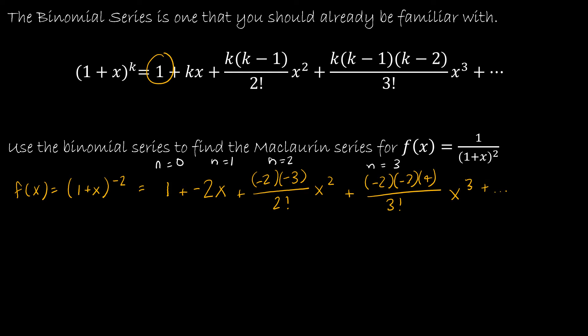Let's see what I can simplify. 2 factorial is 2 times 1, and 3 factorial is 3 times 2 times 1. The first term is 1, and the second term simplifies to negative 2x. For the next term, I have negative 2 times negative 3, which is positive 6, divided by 2 factorial, which is 2 times 1 — so 6 divided by 2 is 3. The 2 essentially cancels, so I end up with positive 3, giving me positive 3x squared.